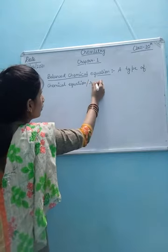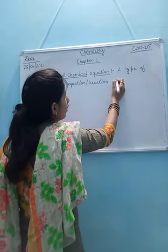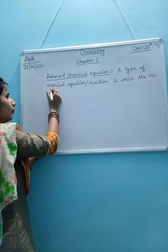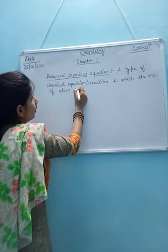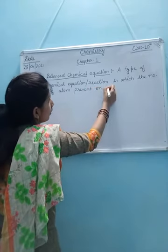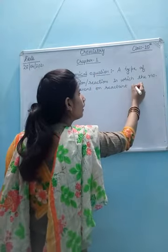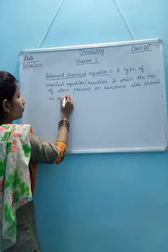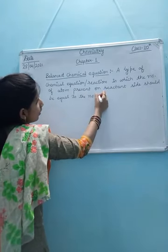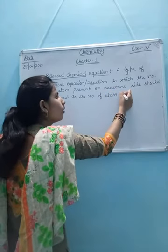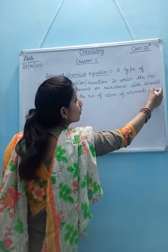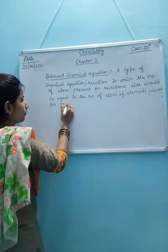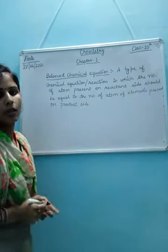A balanced chemical equation is a type of chemical equation in which the number of atoms present on the reactant side should be equal to the number of atoms present on the product side.